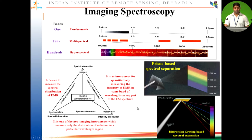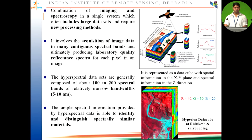Because it is very difficult to launch sensors containing 100 to 200 spectral bands, we use different technologies for spectral separation of the electromagnetic spectrum — such as a prism, where monochromatic light is passed and spectral separation takes place, or diffraction grating-based spectral separation. These technologies are used by hyperspectral remote sensing sensors. Hyperspectral remote sensing sensors are a combination of imaging and spectroscopy. In the data cube, XY represents spatial information and Z represents spectral information, so each pixel gives you laboratory-quality reflectance spectra.